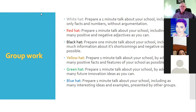Green hat prepared a one-minute talk about school by adding as many future innovation ideas as possible. All these negative sides, disadvantages, advantages, problems, and feelings bring ideas for thinking about a better school — innovating and inventing improvements. Blue hat prepares a one-minute talk including as many interesting ideas and examples presented by other groups as possible. This is a great idea for discussion. I tried it and it really works.